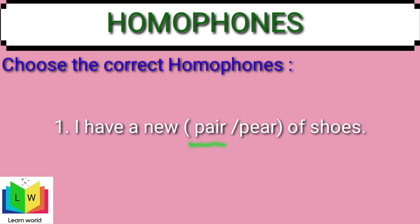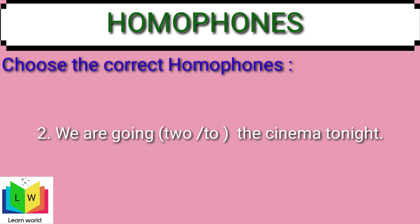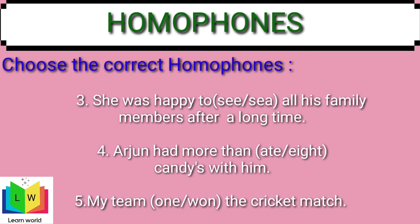The second sentence is: 'We are going to the cinema tonight.' Which 'to' is used as a homophone here? T-W-O means two things — a number. T-O is a preposition. So the right answer here is 'to' — T-O. Now try to find out the correct homophones in these given sentences.